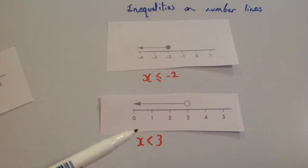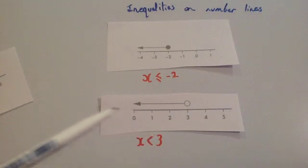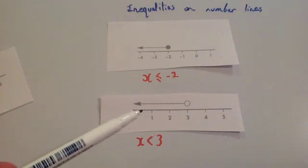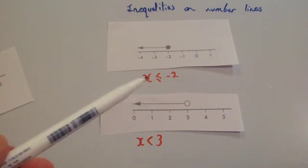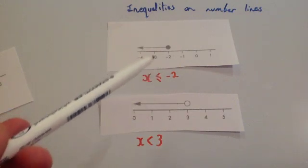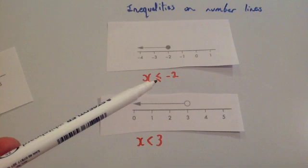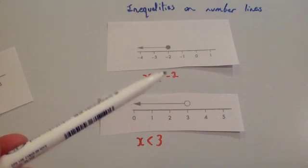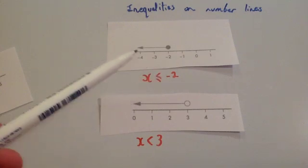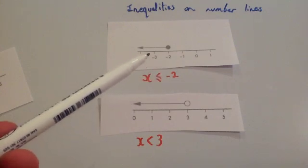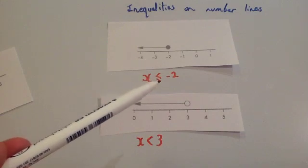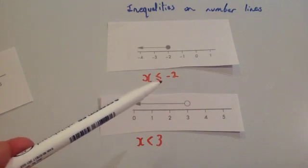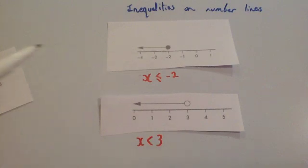What these inequalities mean is that x can be any value that is less than 3 — so it could be 2, 1, 0.7, any number at all that is less than 3. This one means that x can be any number that is less than or equal to minus 2, so it could be minus 3, minus 4, minus 3.75. And because it could be equal to minus 2, it could also be minus 2.